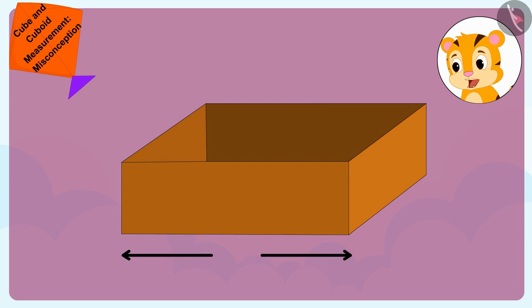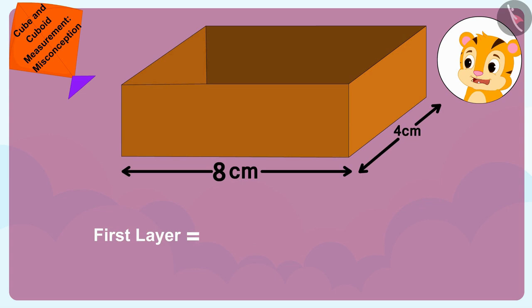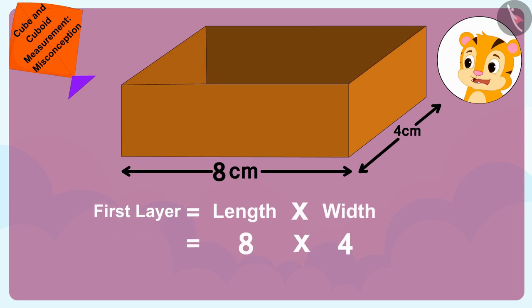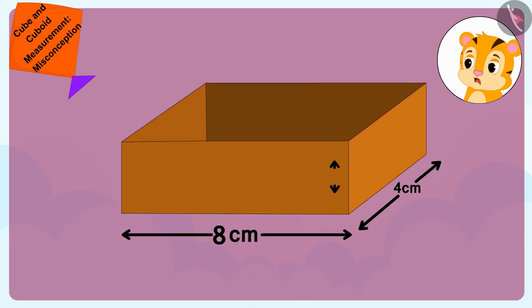See, the length of this cuboid-shaped box is 8cm and the width is 4cm. This means that the first layer of this cuboid-shaped box will have length into width 8 times 4, 32 cubes of dimension 1cm each. And its height is 2cm.